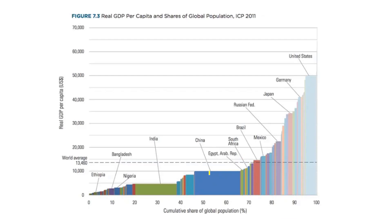Looking at a table here, the world average GDP per capita is around $13,000. Only about fewer than 30 states — the richest countries in the world — are above that average. The vast majority of states are below that average, as you can see right here.